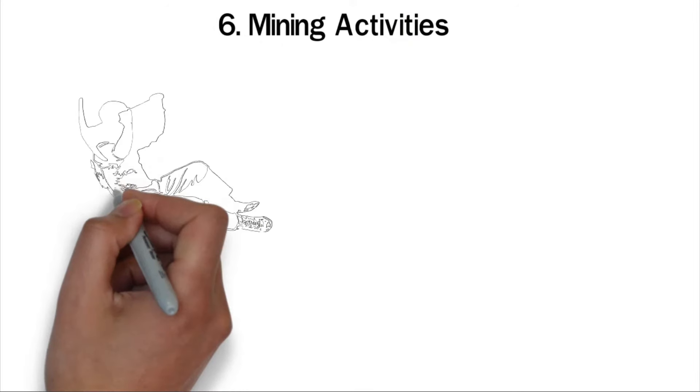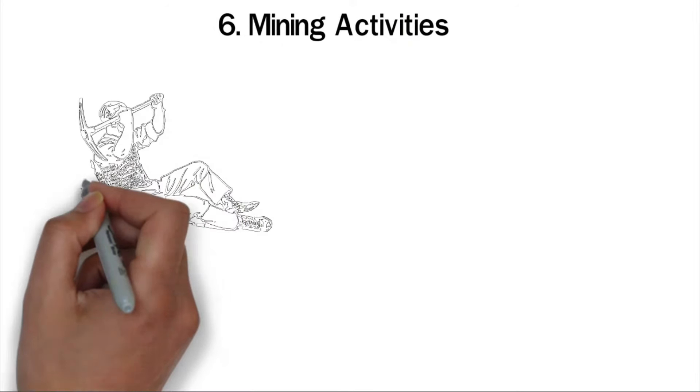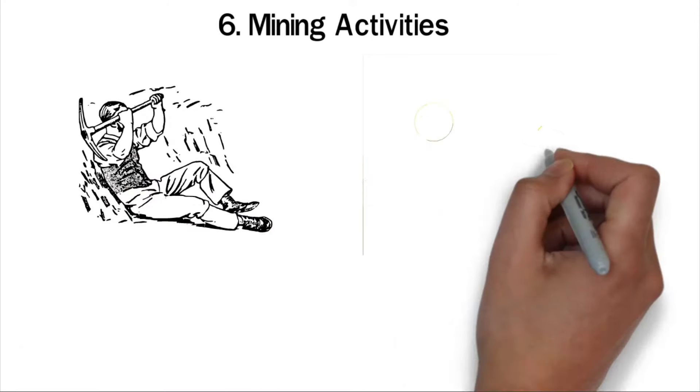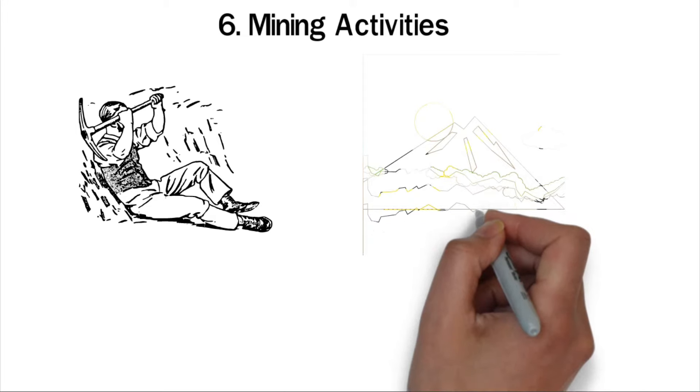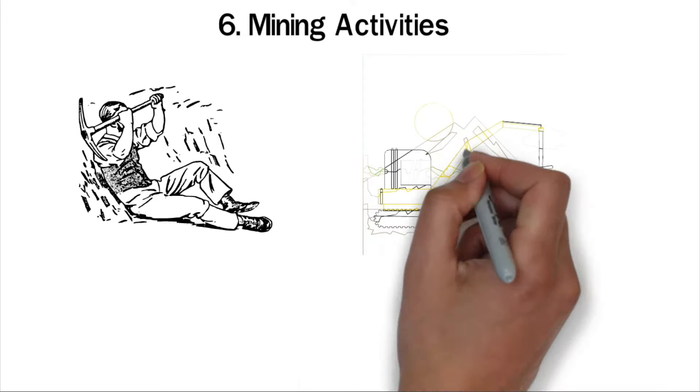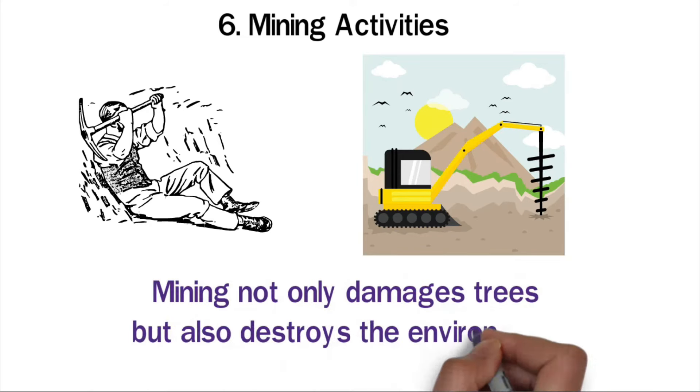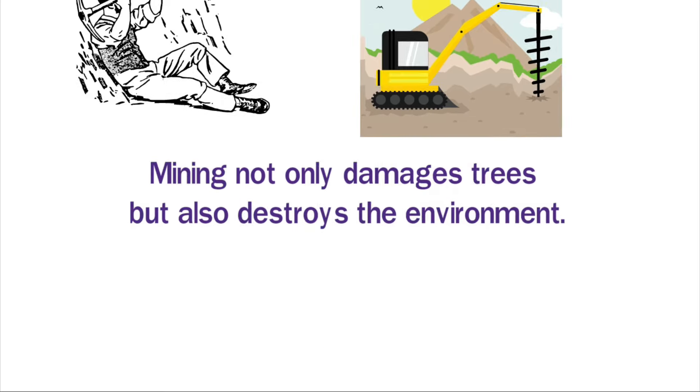Six: Mining activities. Mining is the extraction of minerals, metals, and other geological materials from the soil. These activities can greatly impact forest cover. To excavate these materials from the earth, the forest cover has to be cleared. This leaves the soil bare for the excavation machines. Mining not only damages trees but also destroys the environment.